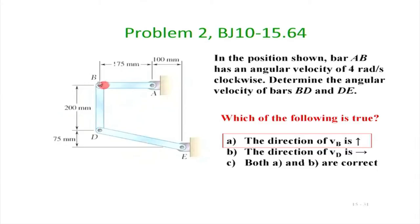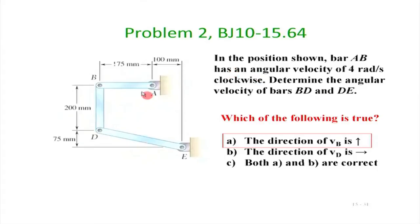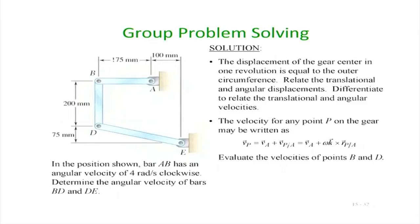We have points A, B, D, E and all the dimensions are given to us. Additionally, we are told that in the position shown, bar AB has an angular velocity of 4 radians per second in the clockwise direction. We are asked to determine the angular velocity of bars BD and DE. We use the simple vector cross product approach we have been using so far.